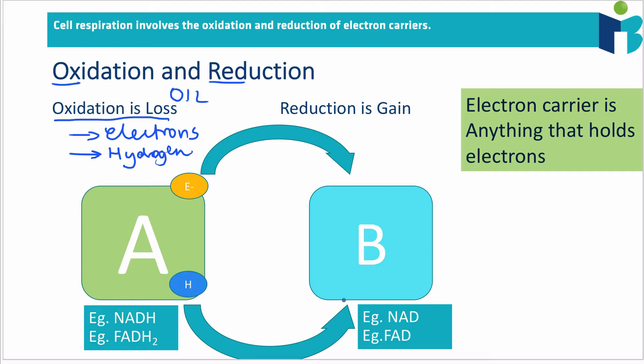And this molecule, which is now accepting an electron or a hydrogen—both work as a definition—this molecule is being reduced. So when something gains electrons or hydrogen, it is being reduced. It is the gain of E- or H, just to make it shorter.